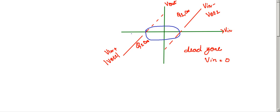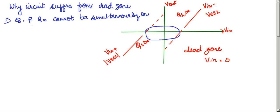Now, why does the circuit suffer from a dead zone? We can make two observations. The first observation: Q1 and Q2 cannot be simultaneously ON. We have seen that for Q1 to be ON, we require that VIN must be greater than VOUT. But for Q2 to be ON, VIN must be less than VOUT.